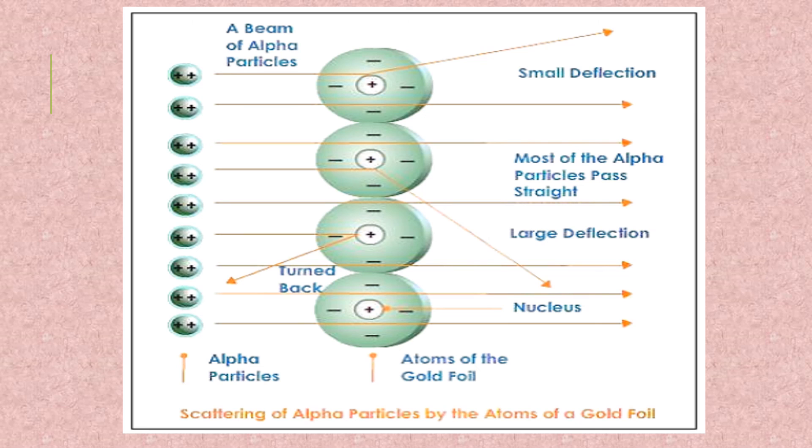This one, you can see, it is deflecting. That means when it is touching the positive side, it is suddenly deflecting, changing the direction. Now this one, you can see, it is certainly bouncing back. That means when these alpha particles are hitting the positive - the highly concentrated positive side - it is bouncing back. This is how Rutherford's model was invented. Hope you understand.